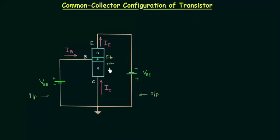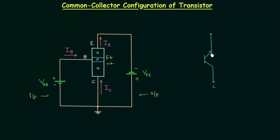We can also represent the common collector configuration using the transistor symbol. I will quickly draw the symbol of the transistor. We are using common collector configuration, so the collector is common. This is the emitter. For an NPN transistor, this is the direction of current. This is the base.